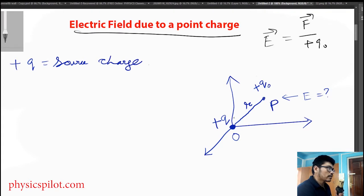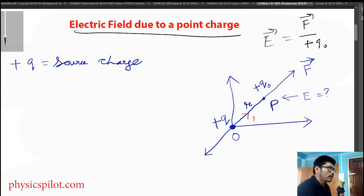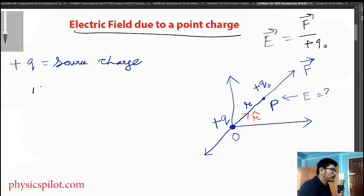Now, if you have the source charge, you can apply the formula step by step. So you can increase the function of the electric field: E is equal to F divided by the test charge.